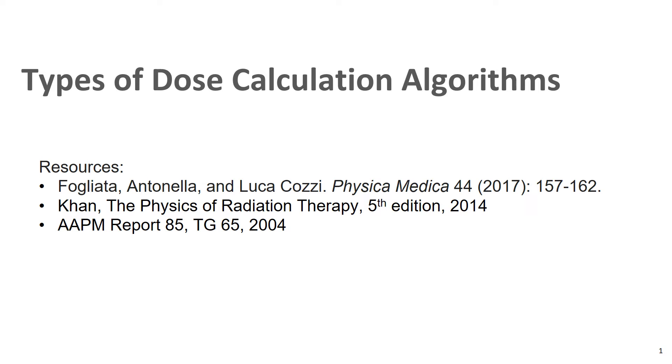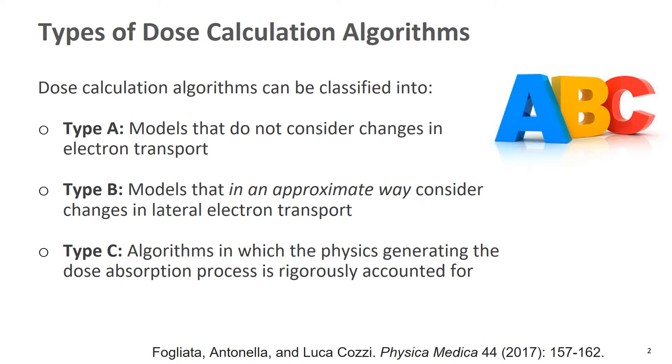In this video, we're going to talk about different types of dose calculation algorithms. We can classify dose calculation algorithms into three different categories, which we'll call types A, B, and C.